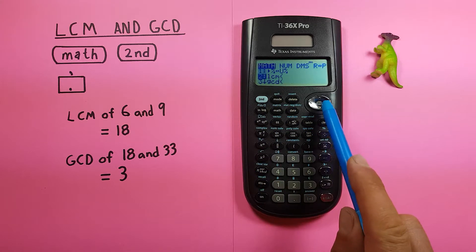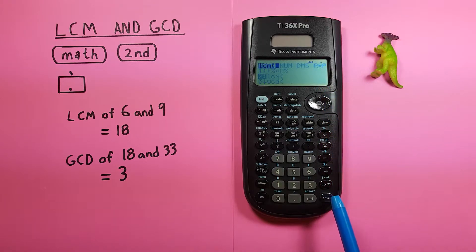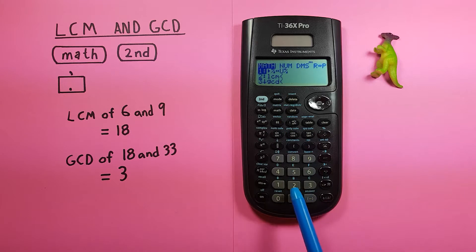We can either scroll down one so that we're highlighting the two and press enter or we can go back into that menu and just press the two and that brings the LCM onto our screen with an open bracket.